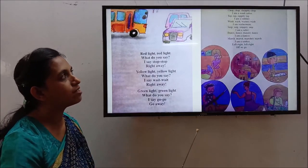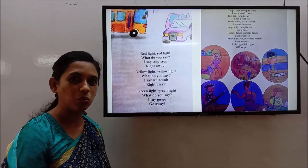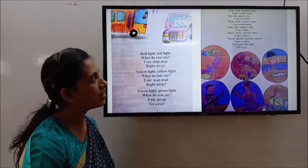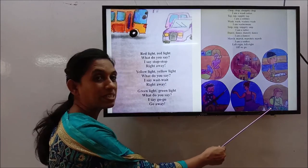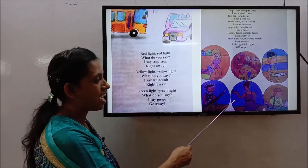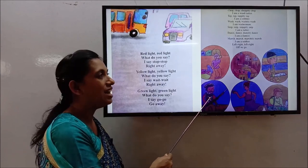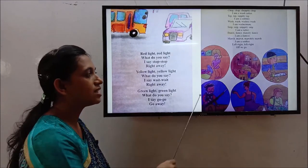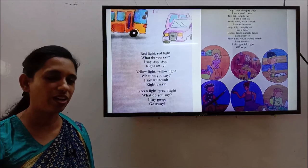Okay, let's review our another rhyme. Chop, chop, chop, choppity chop, I am a wood cutter. Tap, tap, tappity tap, I am a cobbler. Wash, wash, washity wash, I am a washer man. Snip, snip, snippity snip, I am a tailor. Dance, dance, dancity dance, I am a dancer. March, march, marchity march, I am a soldier. Left, right, left, right, off we go. You will see these pictures and you will learn these rhymes. So, you will memorize it very quickly.